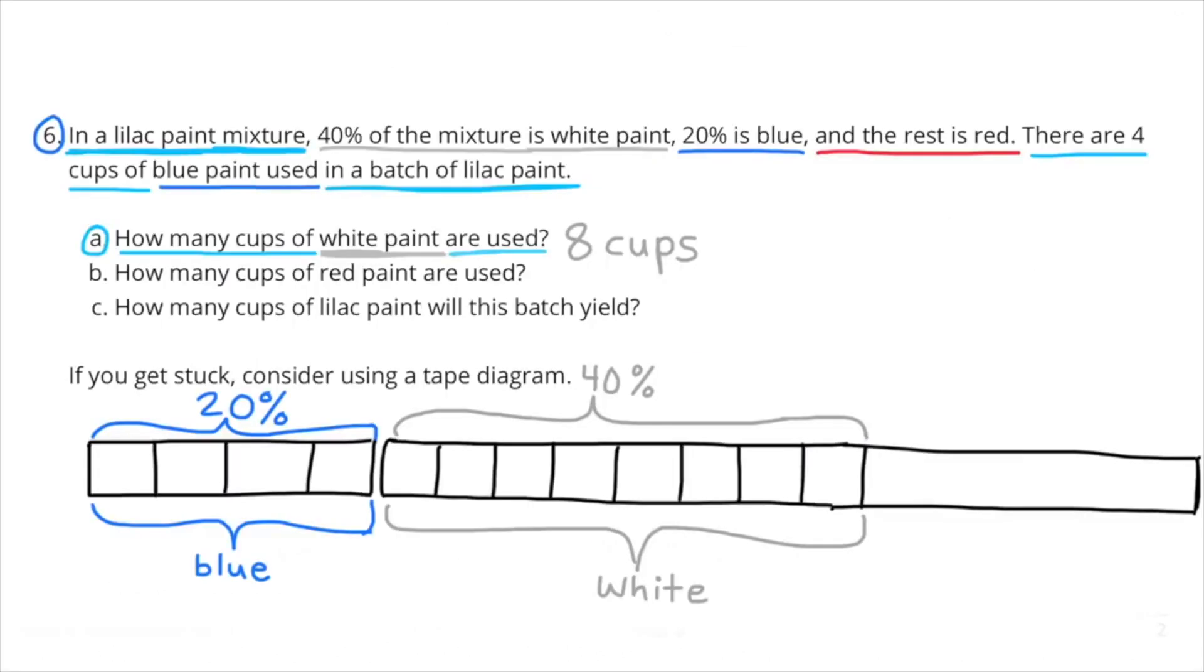Number 6: In a lilac paint mixture, 40% of the mixture is white paint, 20% is blue, and the rest is red. There are 4 cups of blue paint used in a batch of lilac paint. A: How many cups of white paint are used? Well, they tell me that blue paint represents 20% of the mixture and that there's 4 cups of blue paint. So if you double 20%, you get 40%, and that's the percentage for the white mixture. So we'd also have to double the 4 cups. If we double 4 cups, we would get 8 cups. So 8 cups of white paint would be 40% of the mixture. There are 8 cups of white paint used.